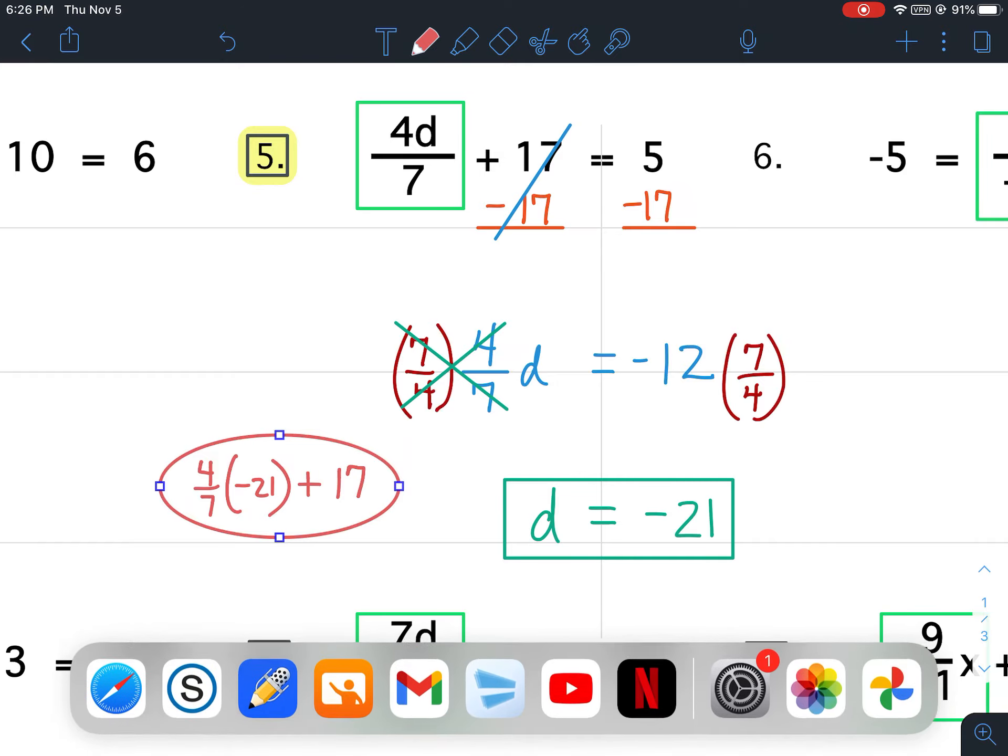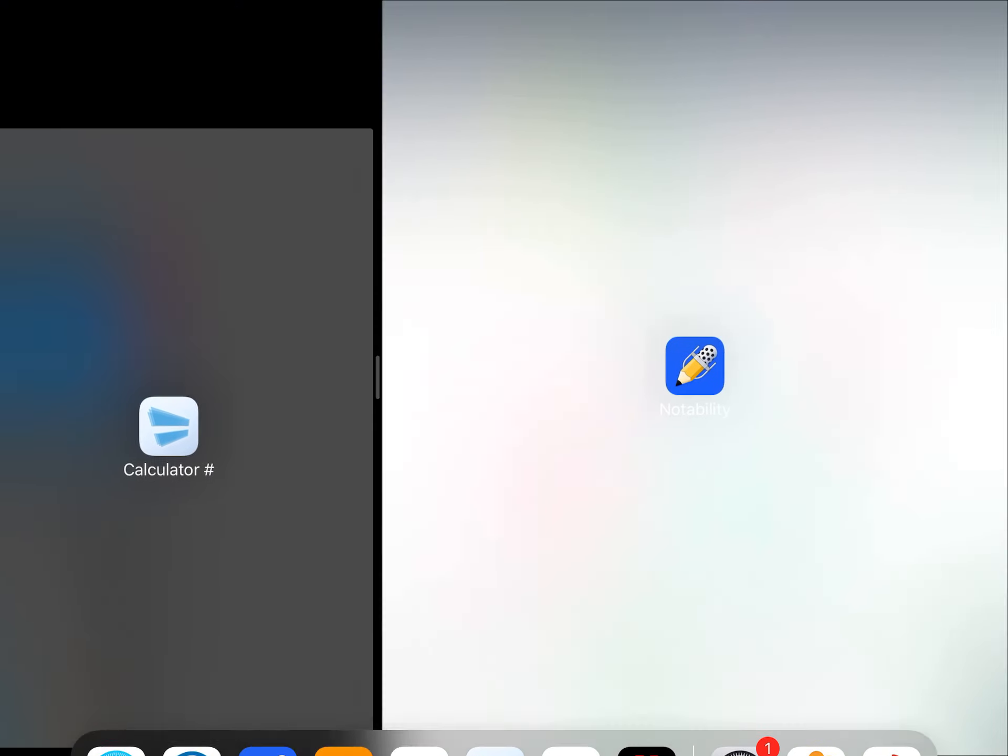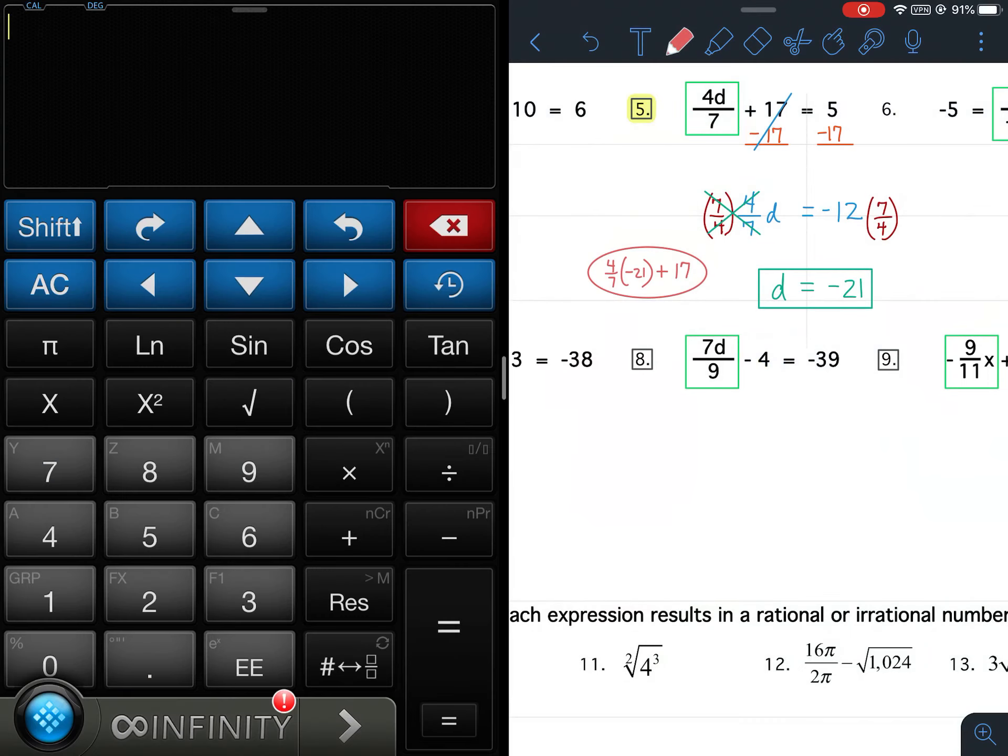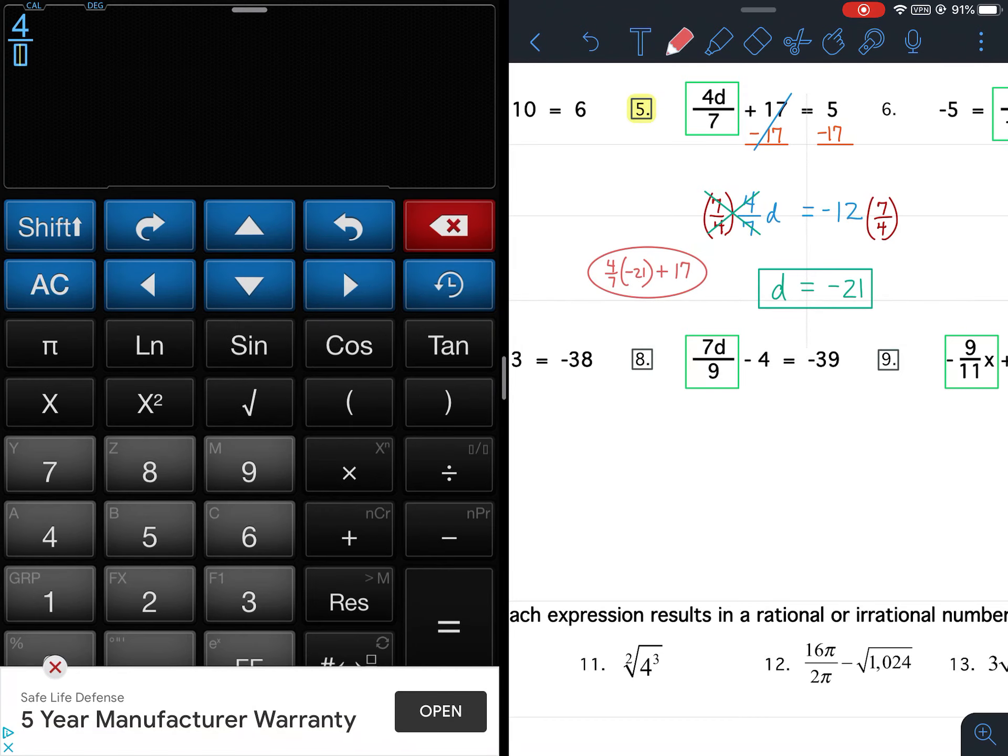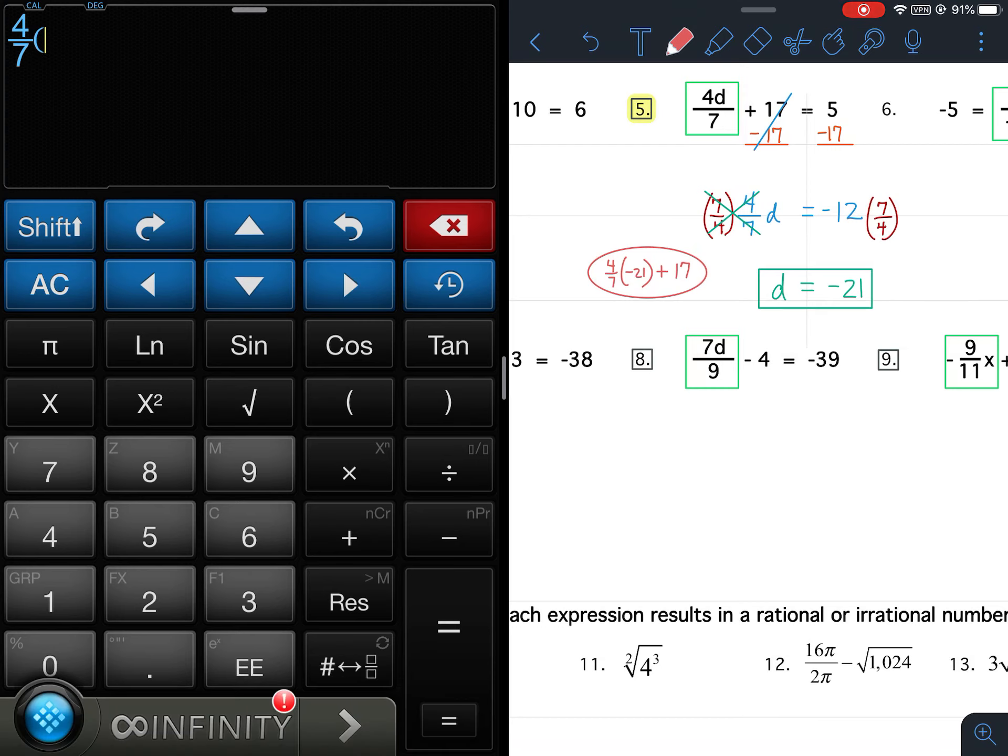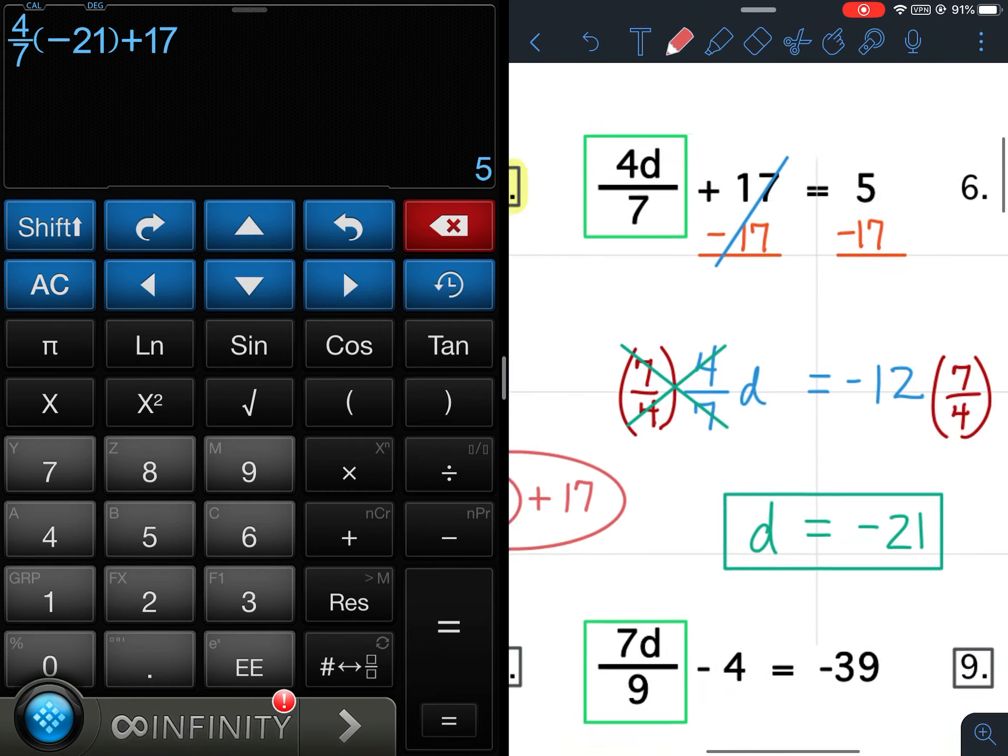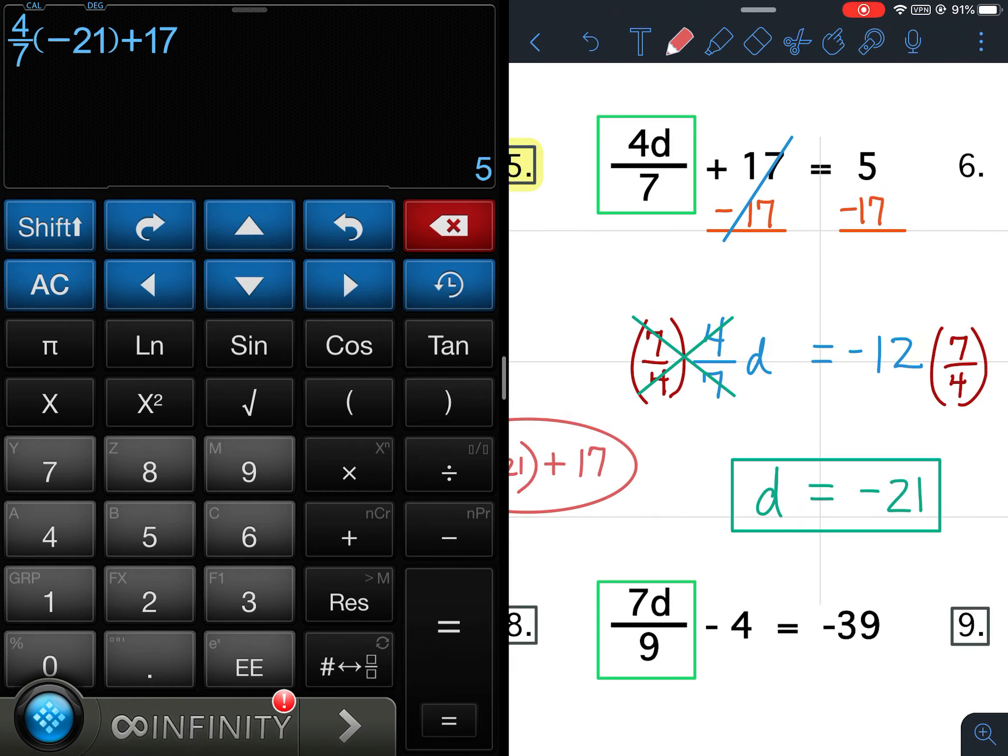Let me bring up the calculator. All right, so 4 7ths times negative 21, and then plus 17. I got 5, which is what that says on that side, so we are correct.